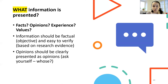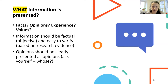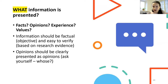After 'who,' we go to 'what.' What information is presented? Are these facts? Opinions? Is it based on experience? What are the values behind this? For health information, it should be factual or objective, and easy to verify whether it's based on research evidence. Opinions are not invalid — patient lived experience of disease is very valuable and important — but it's important to know which one you're facing. When it is opinion, whose opinion is it, and do you trust that source?